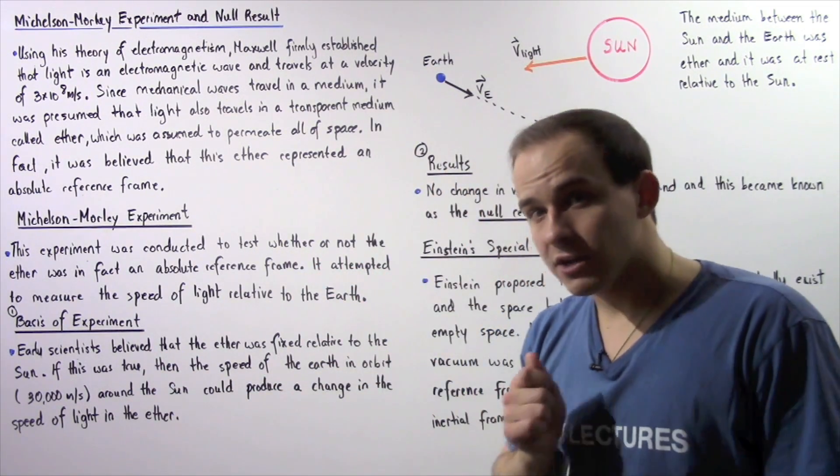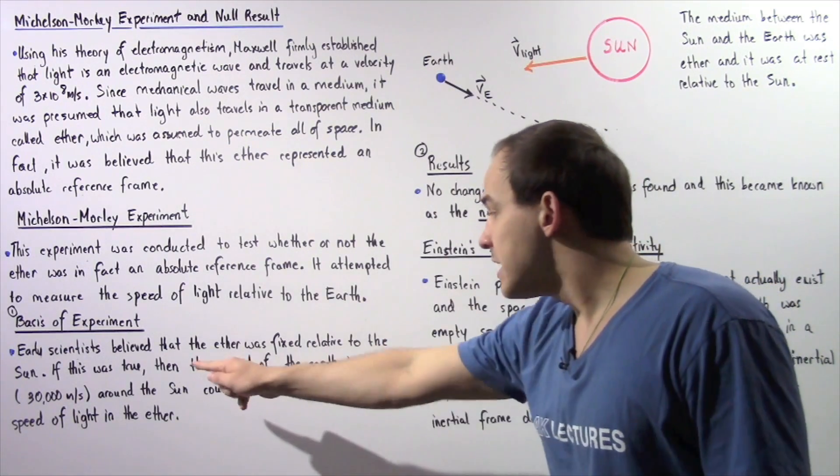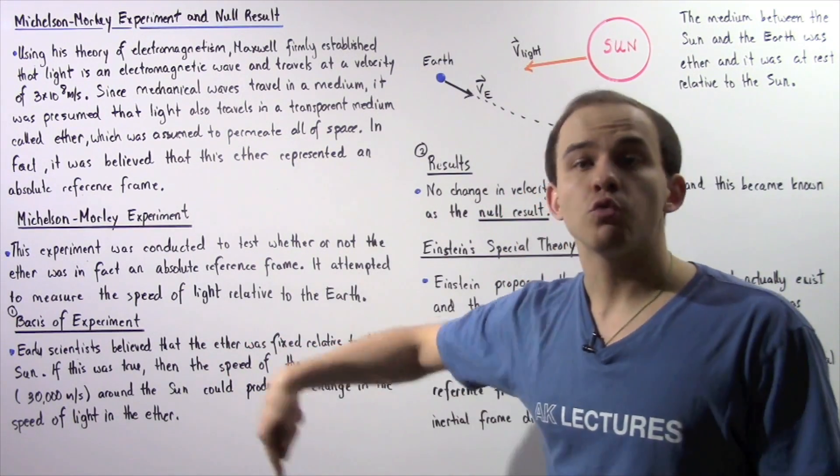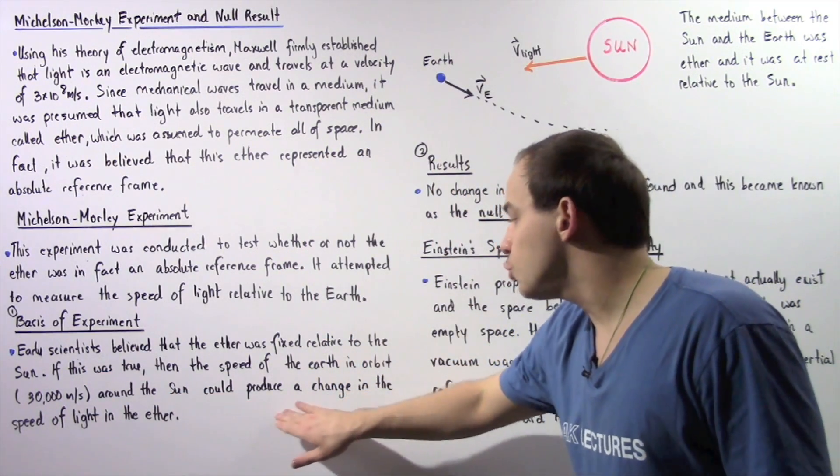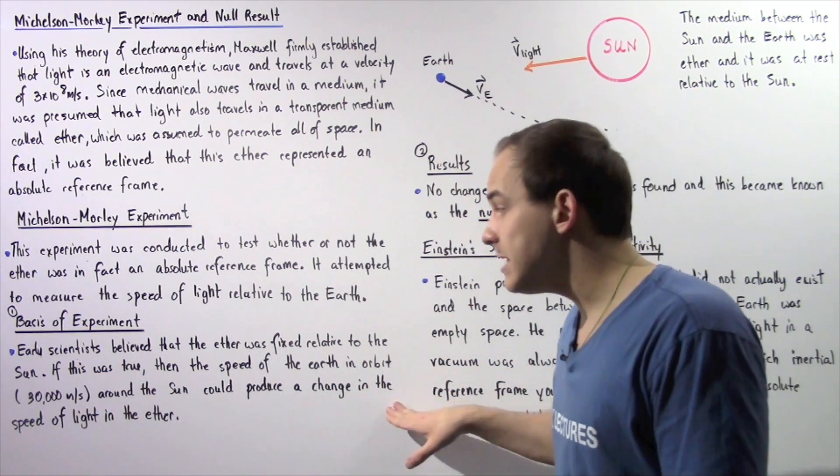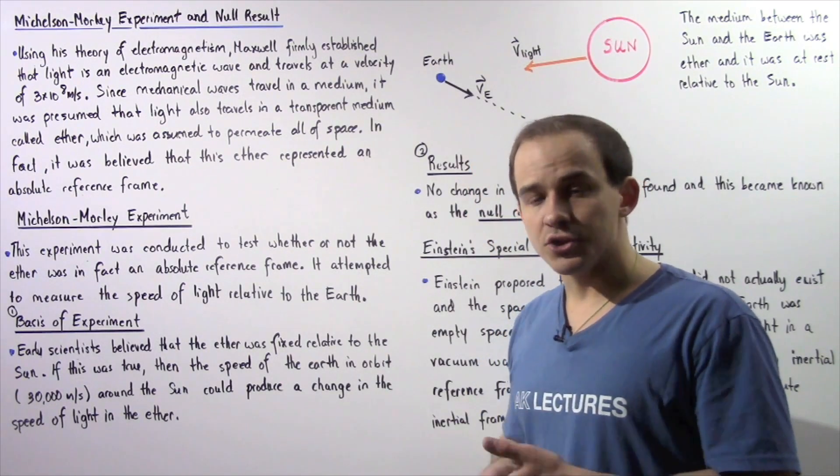If this was in fact correct, then the speed of earth around the sun, about 30,000 meters per second, could produce a change, a shift in the speed of light in that ether.